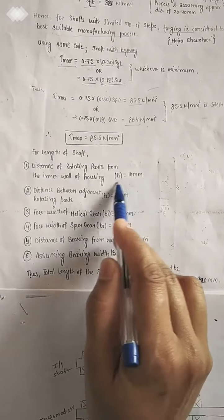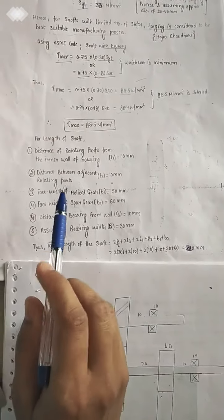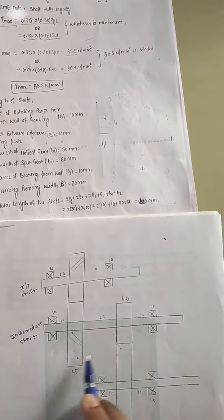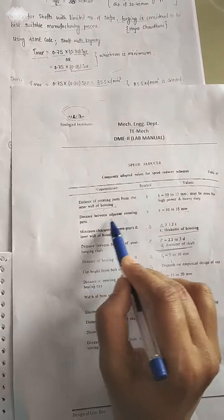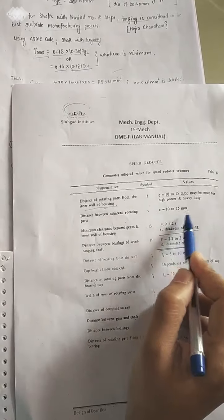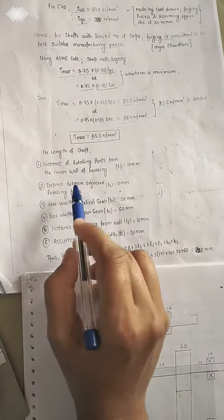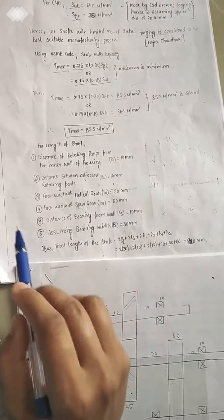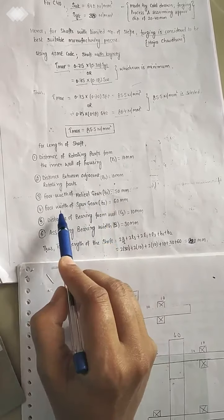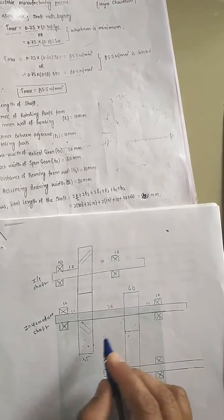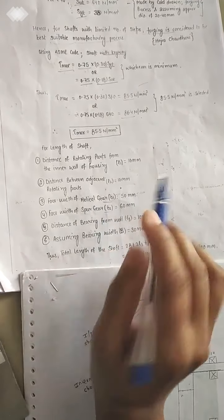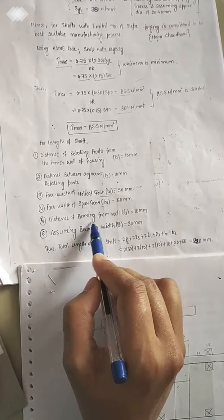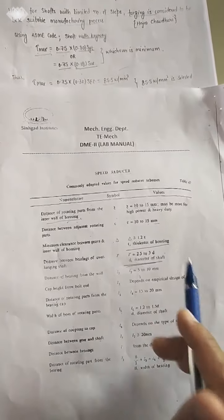The second parameter is the distance between adjacent rotating parts — that is, from one gear to another. From the chart, this distance is 10 to 15 mm; we take l2 = 10 mm. Next are the face width of the helical gear and the face width of the spur gear, which we already calculated. Finally, we use the chart again for the distance of the bearing from the wall, l3.